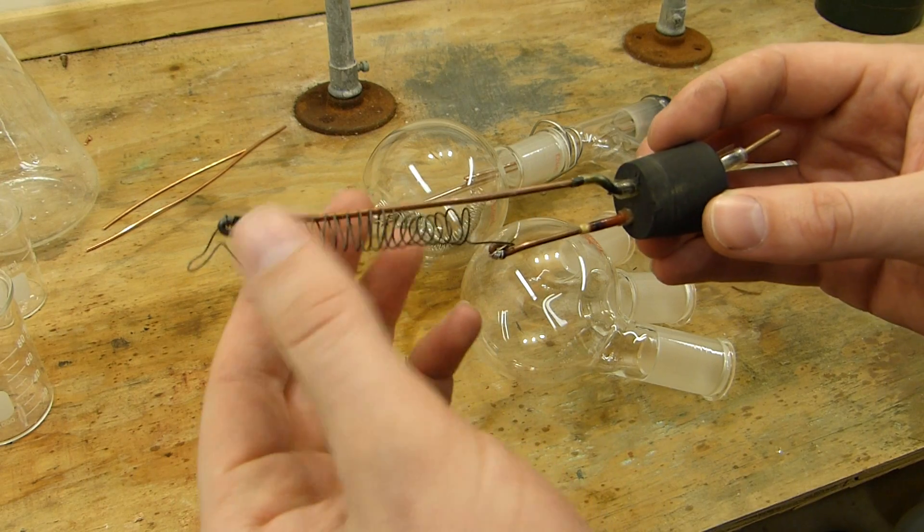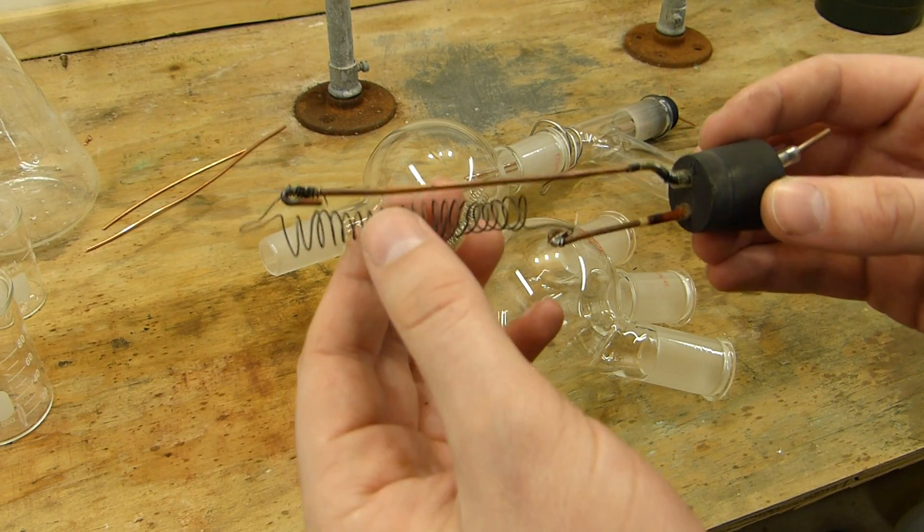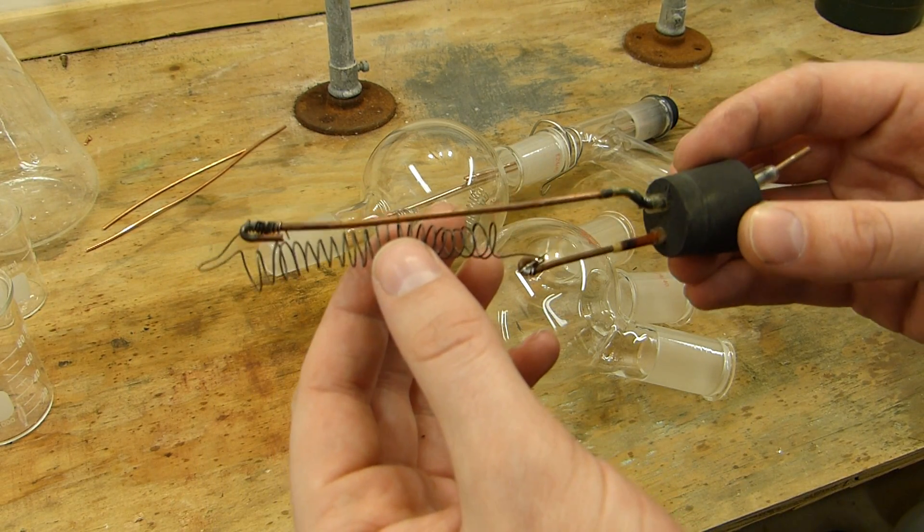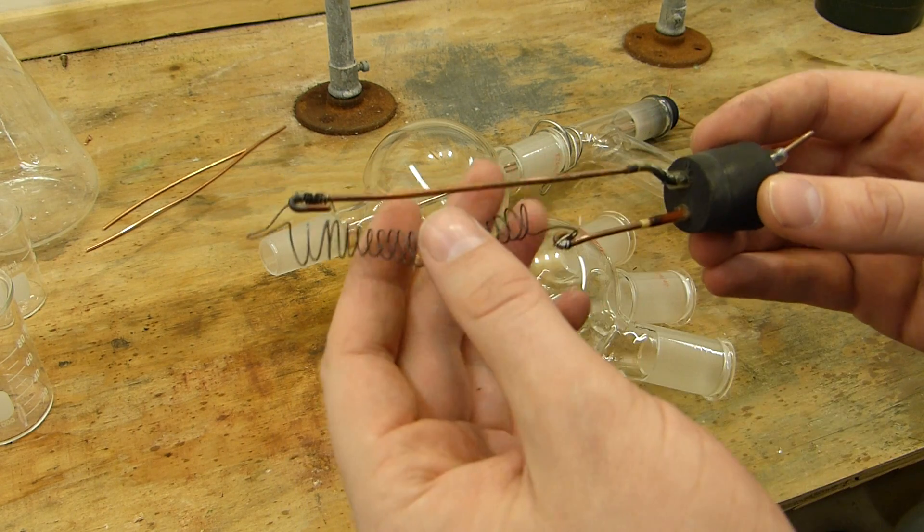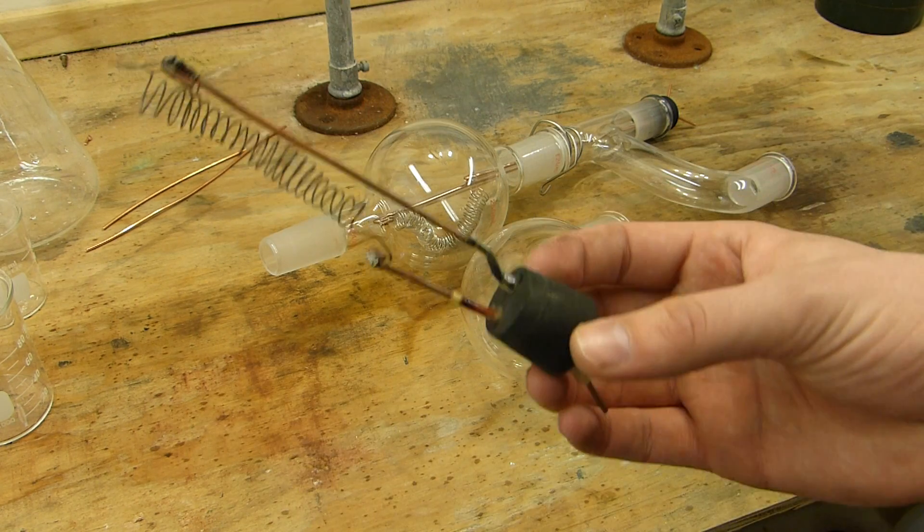Also, you might notice that you can see the filament currently is caught on this and it's touching the wire here. So that's obviously not good. That'll cause a short. It'll burn out the nichrome. I just drive this with a Variac, by the way.